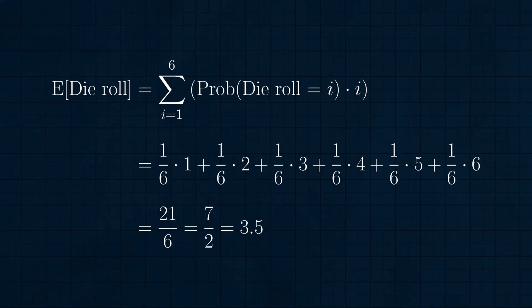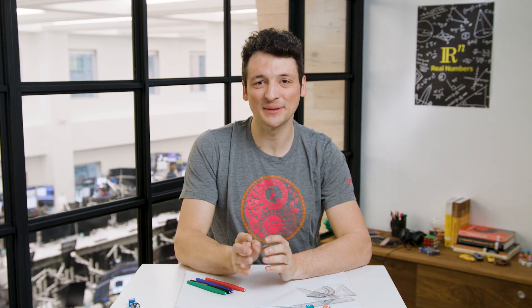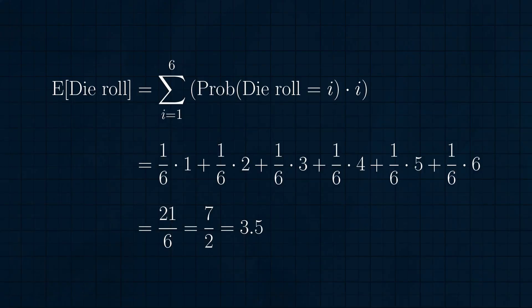Let's look at an example. We just took the average of a set of three known die rolls. But because a die roll is a probabilistic process that outputs a value, we can compute the expected value of a single die roll. We compute it by summing up these values, weighted by — so multiplied by — their probabilities of occurring. In this case, each weight is one-sixth, and the outcomes are 1, 2, 3, 4, 5, and 6. So the expected value is 21 over 6, or 7 over 2. Note that the expected value is not a possible outcome — you never roll a 3.5 with a six-sided die — but the number that best summarizes the set of outcomes is 3.5.